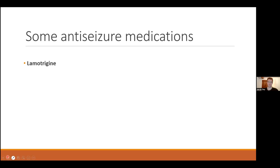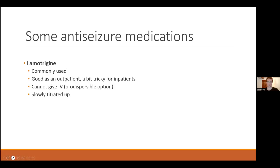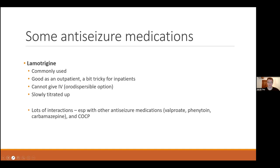Lamotrigine has been around about 25 years, is pretty common, a good antiepileptic, and generally well tolerated — good for outpatients but can be a pain for inpatients when they become unwell. You can't give it IV, but there is an oral dispersible option. It has to be built up quite slowly — typically six to ten weeks to reach a proper treatment dose — so it's not effective for quickly gaining seizure control in a new situation. It has quite a few interactions, including reducing exposure to the combined oral contraceptive pill, so always check an interaction checker when prescribing it or adding a new medication for someone already on it.